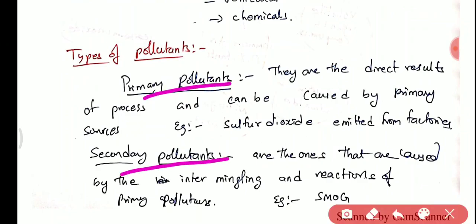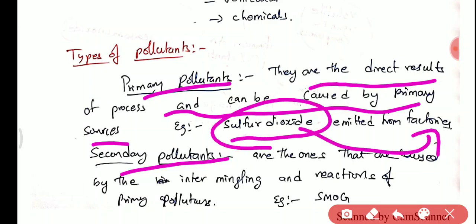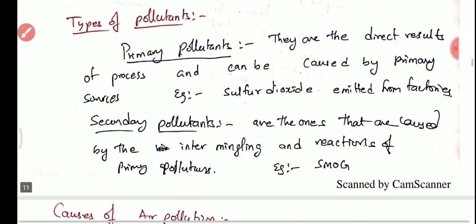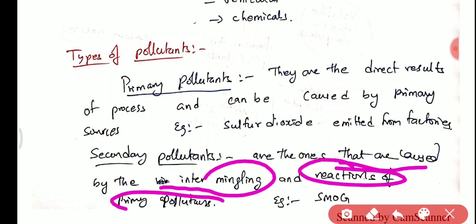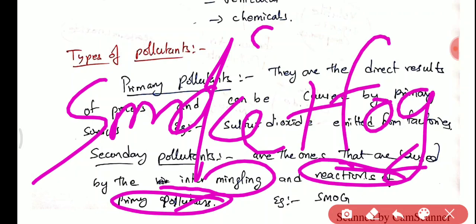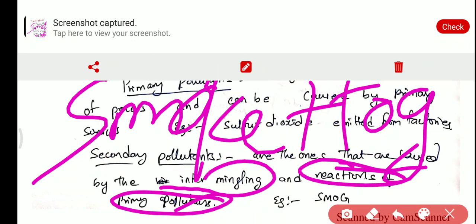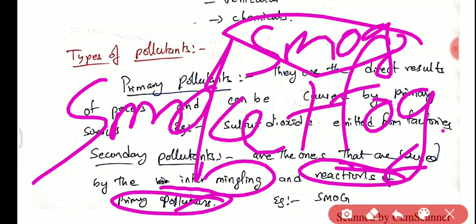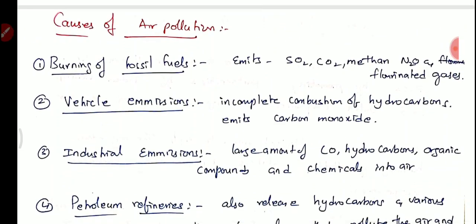There are two types of pollutants: primary pollutants and secondary pollutants. Primary pollutants are the direct results of a process — for example, sulfur dioxide released directly from factories. Secondary pollutants are caused by the intermingling or reaction of primary pollutants. For instance, smoke plus fog combine to form smog, which is very dangerous in cities.